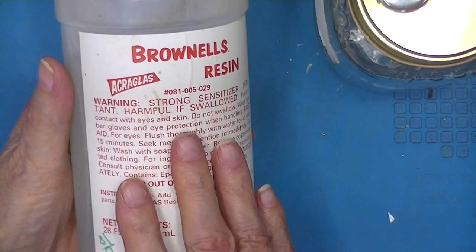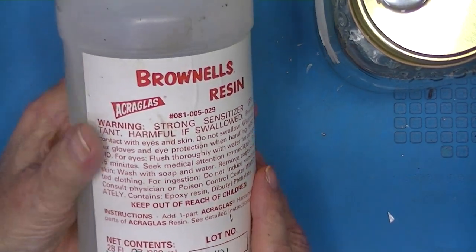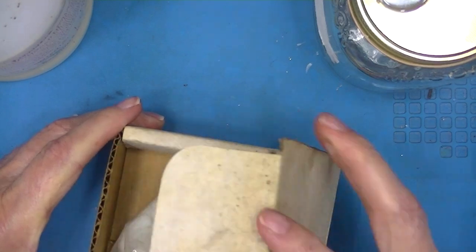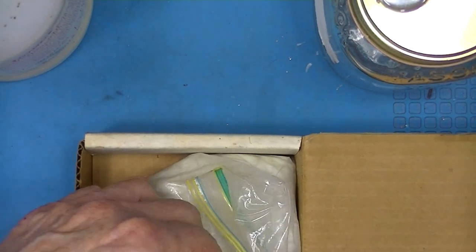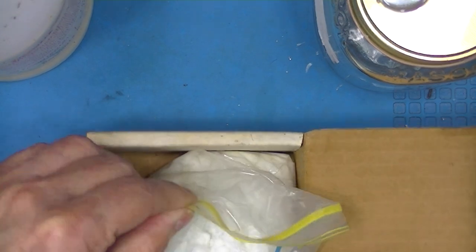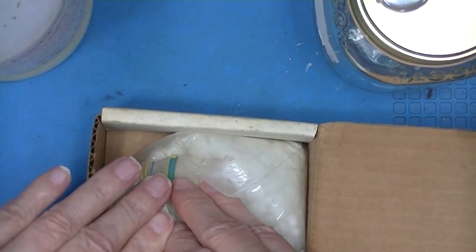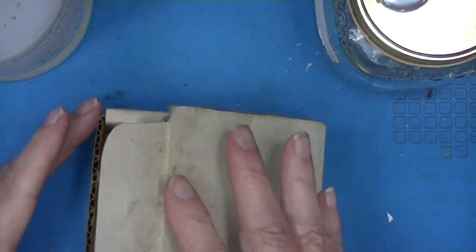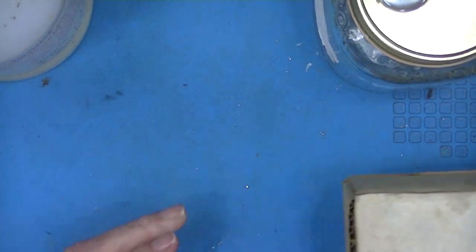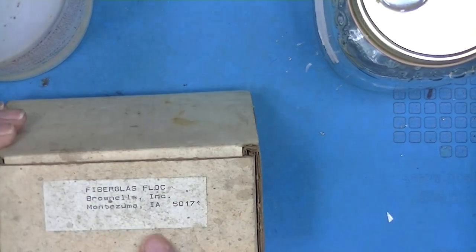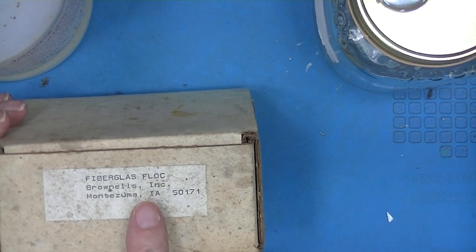This also is available in a quick hardening version. Optionally, sometimes you can buy it in a kit, but optionally it comes with this chopped fiberglass flock. Just little short pieces of glass fiber. If you mix some of this in with the mixed hardener and resin, it loses its liquidity and becomes more like a paste, depending on how much of this flock you put in it.